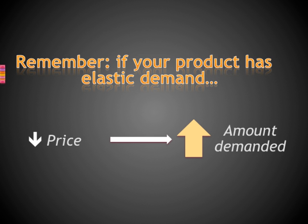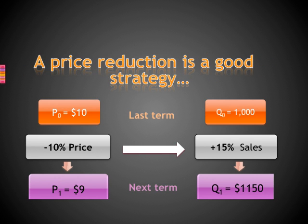It means that if you reduce the price, you will get more sales that will compensate the lower price per unit. For instance, let's reduce the price by 10%. Thanks to the fact that our product has an elastic demand, we know that sales will increase over 10% — let's say 15%. From last term with a price of $10 per unit and 1,000 units sold, we would go next term to a price of $9 and 1,150 units sold.